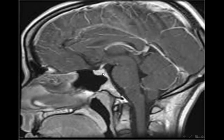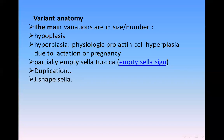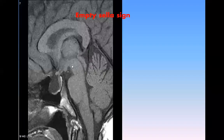Here we have variants. The main variations are in the size and number: hypoplasia, hyperplasia — which we can see with lactation and pregnancy — hormonal prolactin cell hyperplasia, physiological, partially empty sella, anti-cell sign, duplication, and J-shape sella. This is the empty sella sign — this is a sagittal MRI T1 showing the empty sella sign.